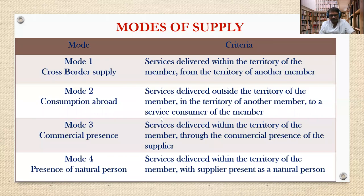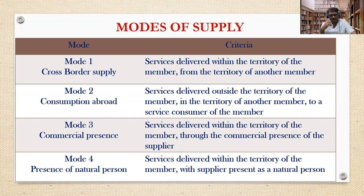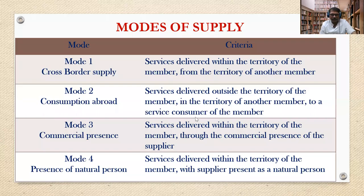Mode 2 is consumption abroad, where service providers set up their service station in the area where it is required. The service is delivered outside the territory of the member, in the territory of another member. For example, a foreign company needing to serve Indian consumers sets up a service station in India, providing services not through online mode but by establishing a physical presence.